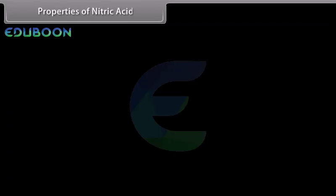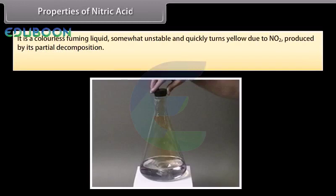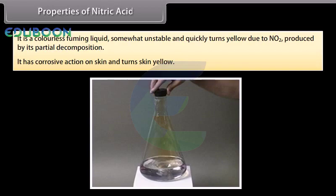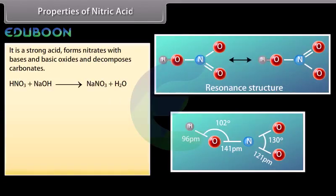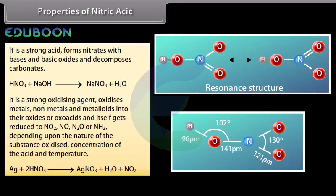Properties of nitric acid: It is a colourless fuming liquid, somewhat unstable, and quickly turns yellow due to NO2 produced by its partial decomposition. It has a corrosive action on skin and turns it yellow. It is a strong acid, forms nitrates with bases and basic oxides, and decomposes carbonates. It is a strong oxidizing agent that oxidizes metals, non-metals and metalloids into their oxides or oxo acids, and itself gets reduced to NO2, NO, N2O or NH3, depending on the nature of the substance oxidized, the concentration of the acid, and the temperature.